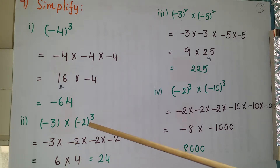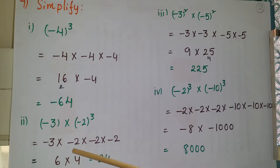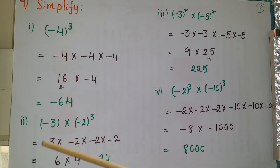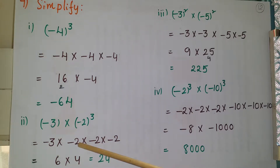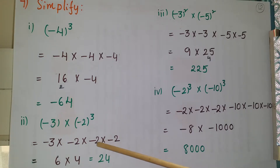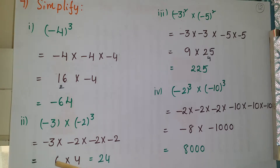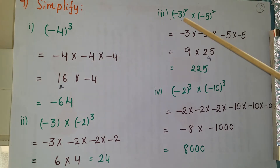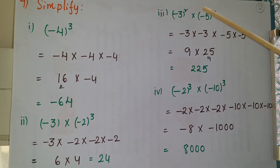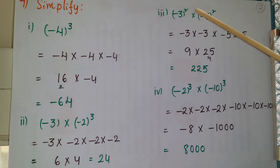Multiply minus 3 into minus 2, which gives plus 6. Then minus 2 into minus 2 is plus 4. So 6 into 4 is 24. The answer to the second one is 24. Third one: (-3)² into (-5)². Here we multiply minus 3 two times and minus 5 two times.